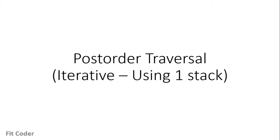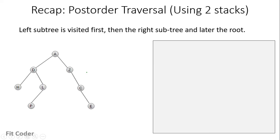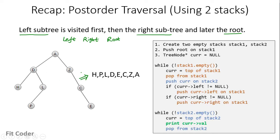In this video, I will explain how we can do the post-order traversal using one stack. In post-order traversal, first we visit the left subtree, then we visit the right subtree, and at the last we visit the root. So the order is left, right, and then root. Post-order traversal of the given tree is this. I have already made a video explaining the recursive method and the post-order traversal using two stacks in my previous videos. In this video, we will see how we can do the post-order traversal using only one stack.